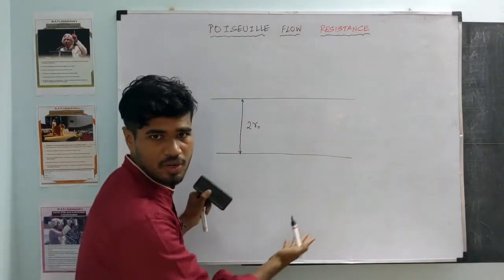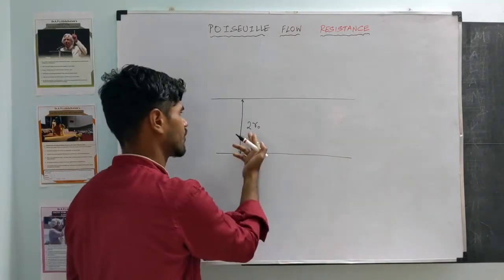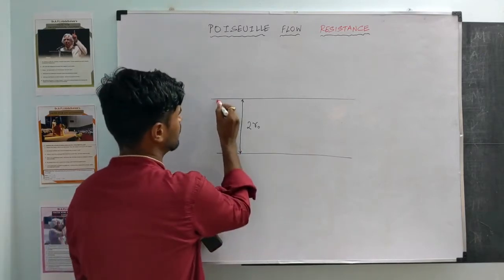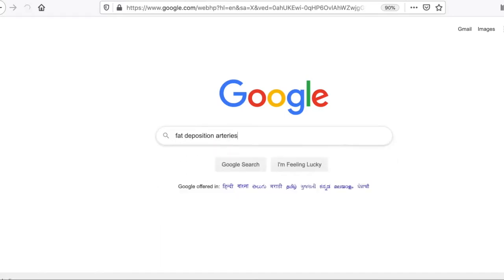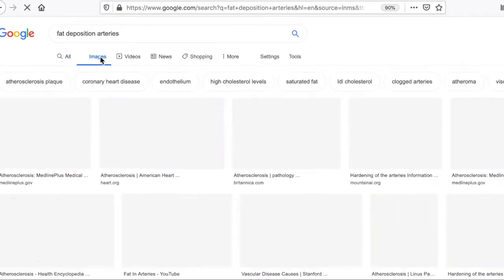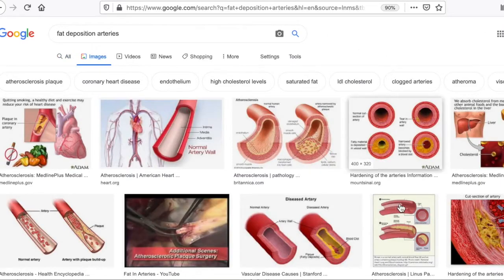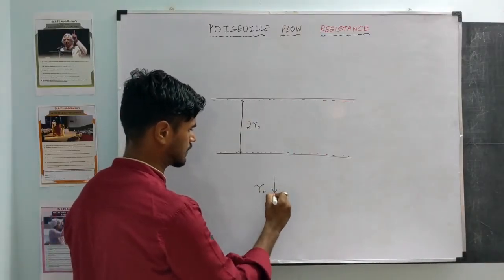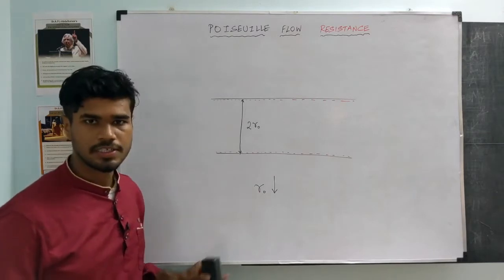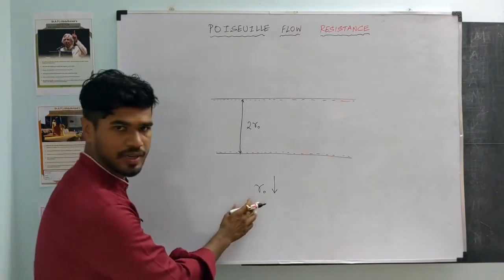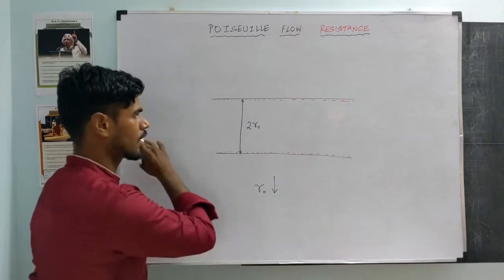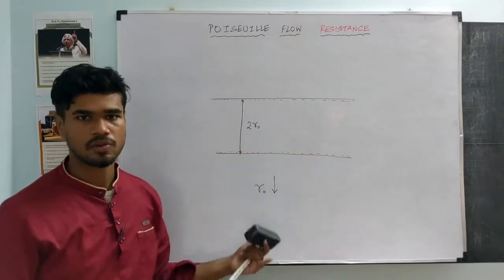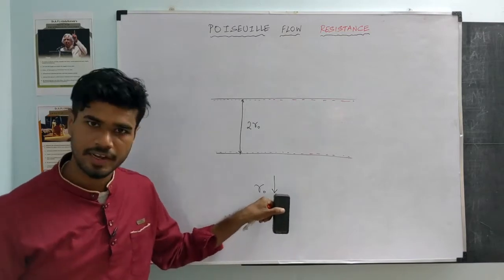Let's say we are looking at a segment of a blood vessel of diameter 2 or 1. With aging, there might be fat deposition along the walls of the blood vessel and the radius might slightly decrease, so R0 would decrease. In this video we are going to quantify the effect of changes in radius on what happens to flow, what happens to pressure, and the long-term pathologies that this decrease in radius would lead to.